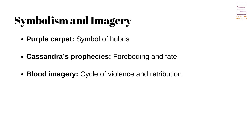Symbolism and Imagery. Aeschylus uses powerful imagery and symbolism to deepen the narrative. The Purple Carpet represents hubris, as Agamemnon walks on it defying the gods. Cassandra's prophecies serve as a foreboding element, highlighting the inevitability of fate. Blood Imagery illustrates the cycle of violence and retribution that plagues the house of Atreus.